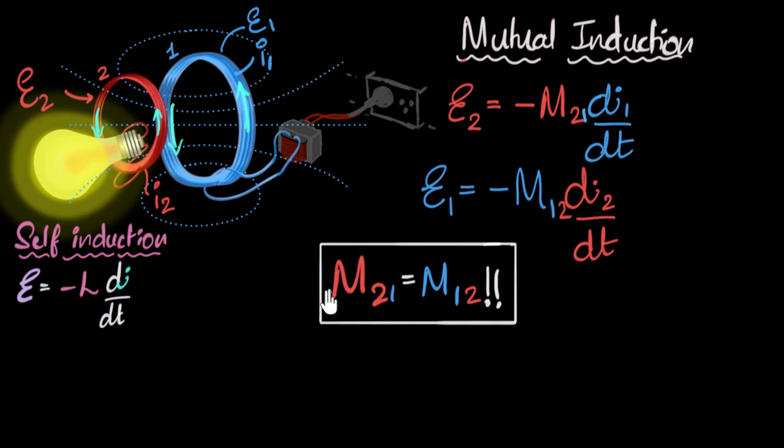One final thing for folks who are really curious: these are not complete equations because this EMF is only due to mutual induction. Remember, there will also be an EMF induced due to its own changes in current — self-induction. So the complete equation would include mutual induction along with self-induction caused by changes in its own current. Similarly, a full equation for the primary would include its self-induction term as well. These now represent complete equations for induction, but unless you're working on advanced engineering concepts, we really don't have to worry about these big equations.